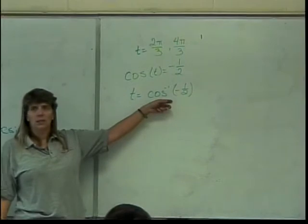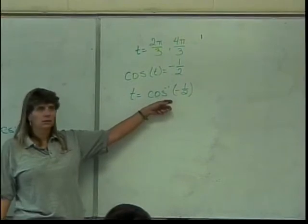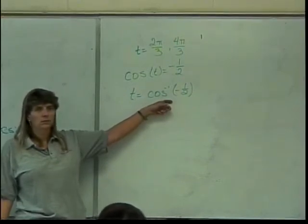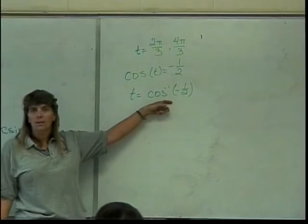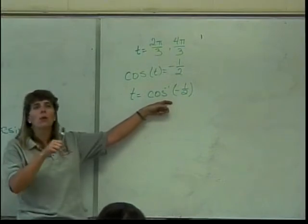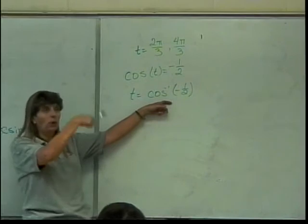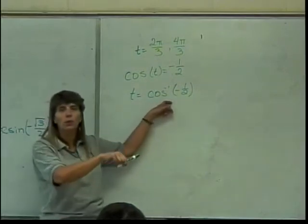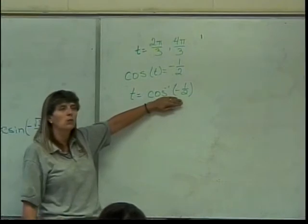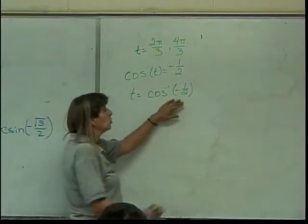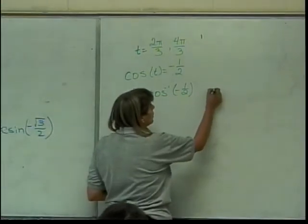What quadrant is this in? Inverse cosines come out in which quadrants? Between zero and pi, which will be quadrants one and two. In quadrant one your cosine is positive; in quadrant two your cosine is negative. So this must be in quadrant two. So this is one of your answers.